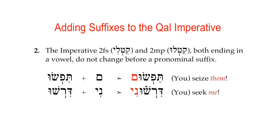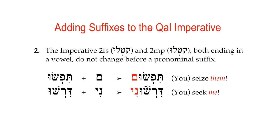The imperative 2FS, kitli, and the 2MP, kitlu, both ending in a vowel, do not change their spelling before a pronominal suffix. Since each form already ends in a vowel, no extra connecting vowel is needed and all the spelling is maintained. For example: tifshu plus -m gives tifshum, 'seize them'; dirshu plus -ni gives dershuni, 'seek me.' These particular forms are very easy to identify. In chapter 23, we'll specify more clues for identifying the imperative in context.